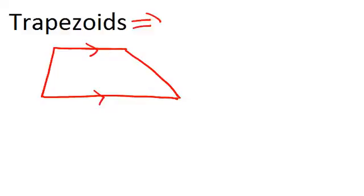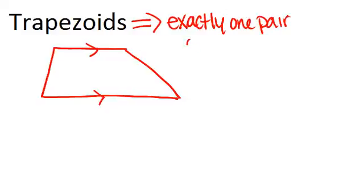A trapezoid is a quadrilateral with exactly one pair of parallel sides. The reason it has to be exactly one pair is that if the shape has two pairs of parallel sides, then it's a parallelogram.